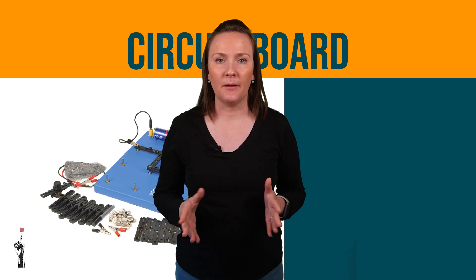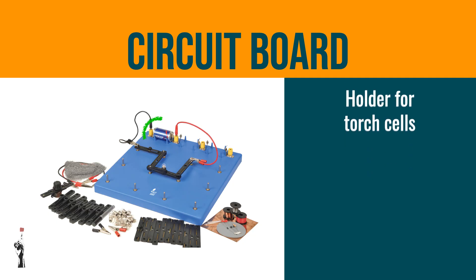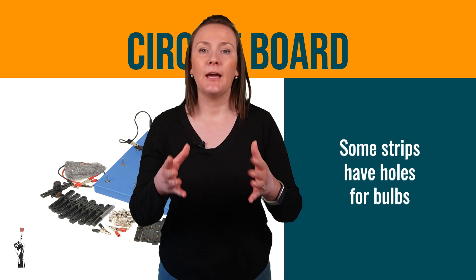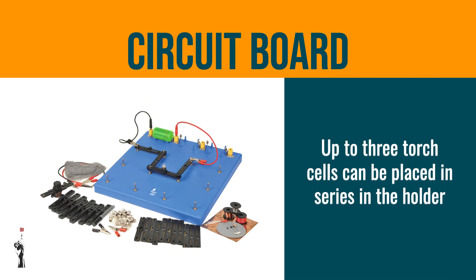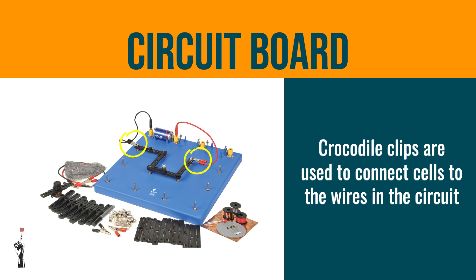A circuit board is made up of the following components. It has a holder for torch cells, metal pegs that are arranged for easy attachment of conducting strips, conducting strips then connect the circuit components. Grade 8, it's important to know that some of these strips have holes for bulbs. Up to three torch cells can be placed in series in the holder.